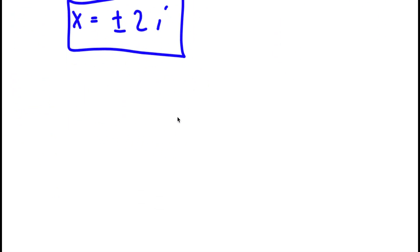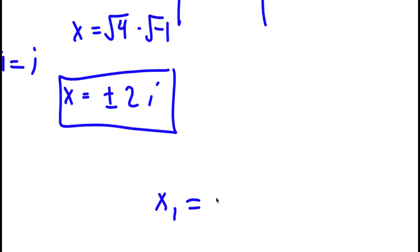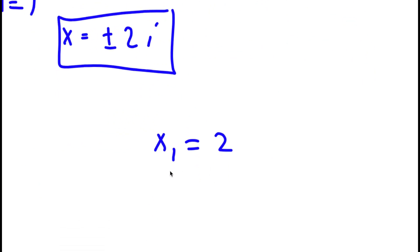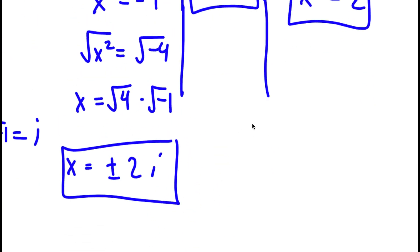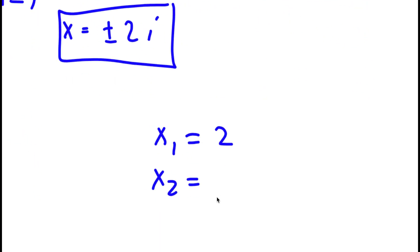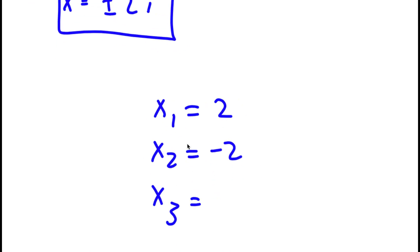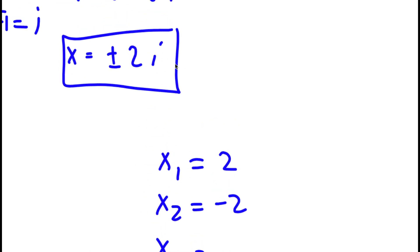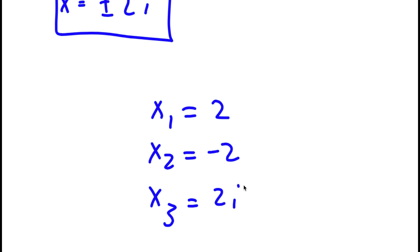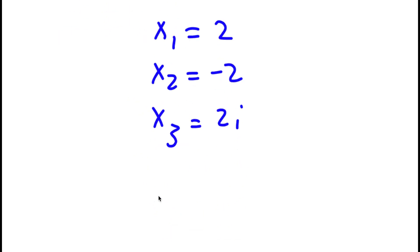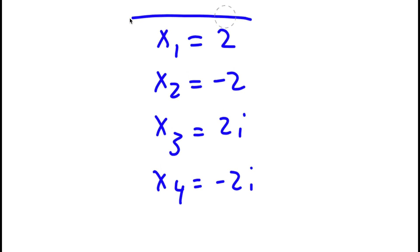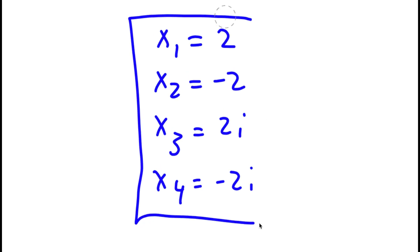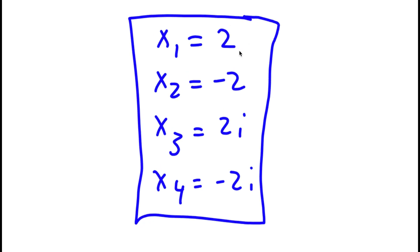So my four solutions here are x is equal to positive 2, x is equal to negative 2, x is equal to positive 2i, and x is equal to negative 2i. These are my four solutions to this problem.